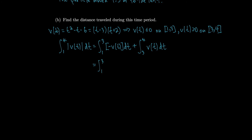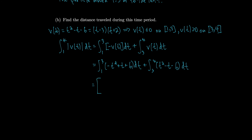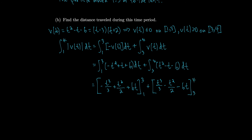For the first integral, minus velocity gives -t² + t + 6; for the second, it's t² minus t minus 6. The first integral becomes (-t³/3 + t²/2 + 6t) from one to three, and the second becomes (t³/3 minus t²/2 minus 6t) from three to four. Together these give 61/6, which is approximately 10.17 meters.